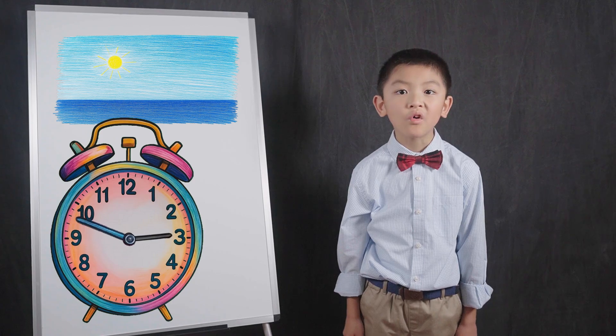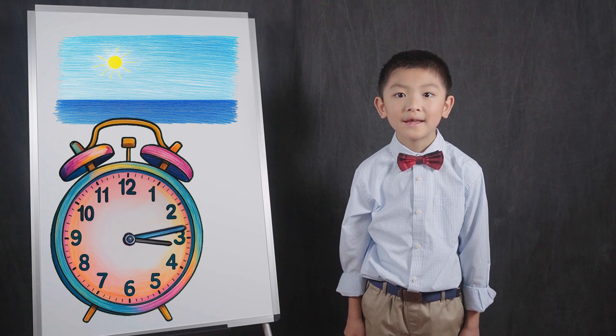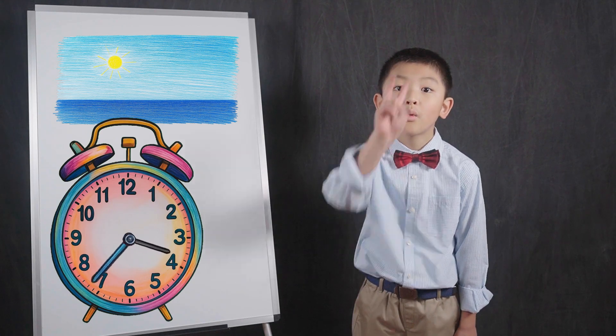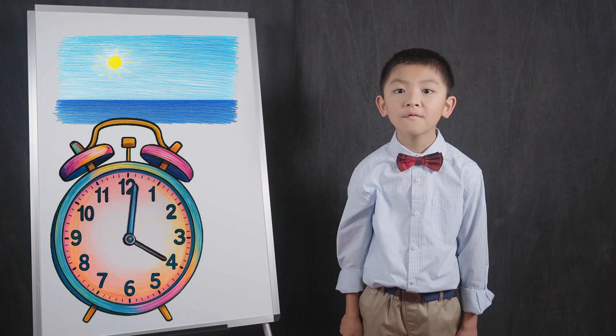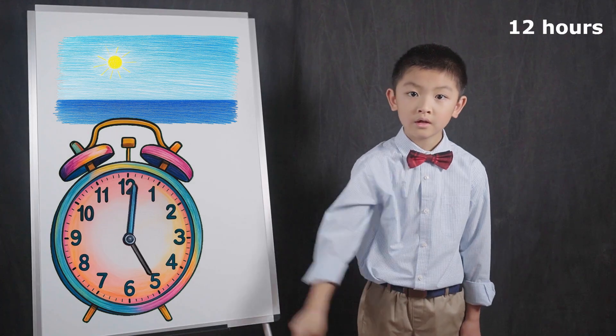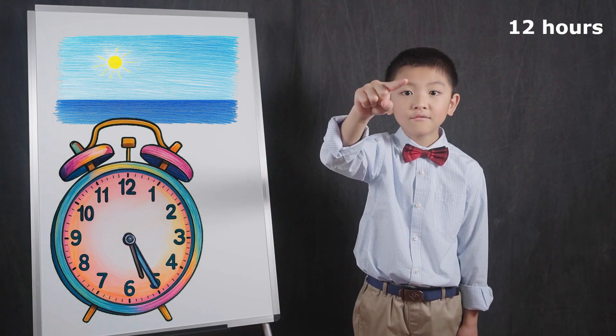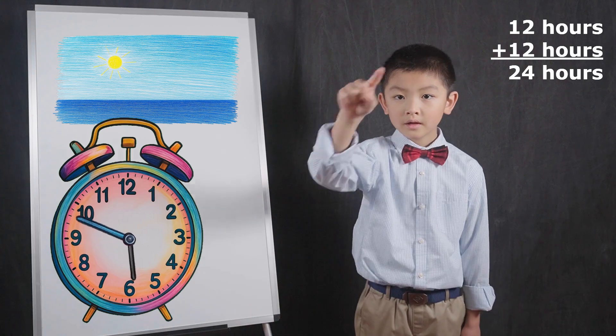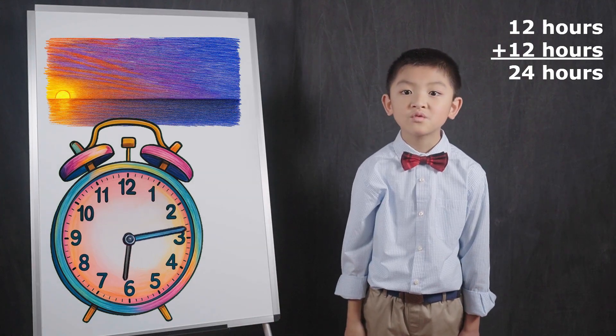12 is half of 24. So this means that our hand needs to move around the clock twice to represent one whole day on most clocks. There are 12 hours in the morning and 12 hours after midday. 12 plus 12 equals 24.